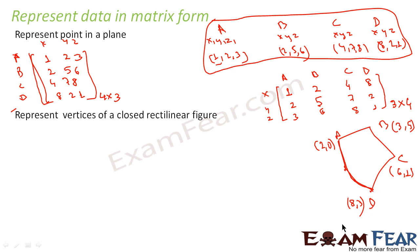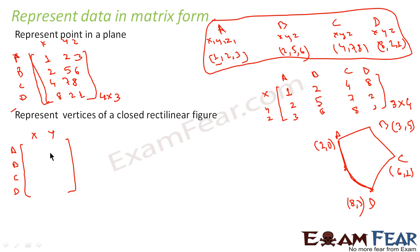Now if you want to find the area or perimeter of this figure and give the data to a computer to perform the operation, you have to convert it into matrix form. One option is to represent the points A, B, C, D as rows with X and Y as columns. For point A, X is 2, Y is 0; for B it is 3, 5; for C it is 6, 1; and for D it is 8, 2 — giving us a 4×2 matrix.